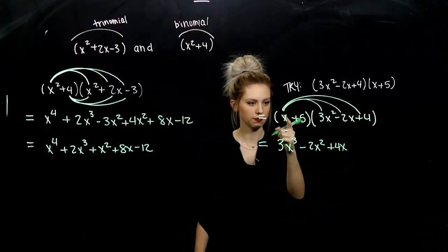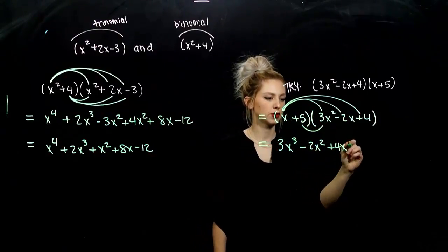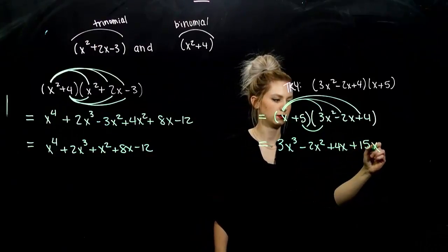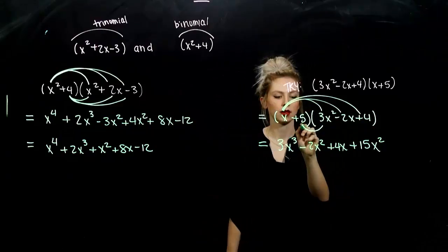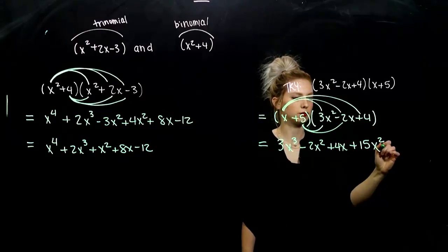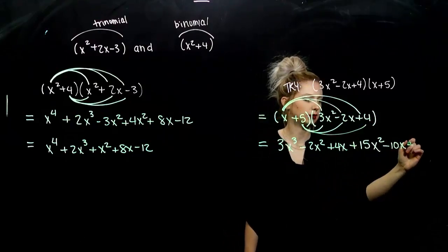So, we took care of all of the first, taking care of all of the second now. Now, 5 times 3 will give me 15. I've got 2 factors of x. 5 times negative 2, negative 10x. 5 times 4, plus 20.